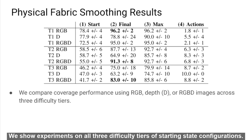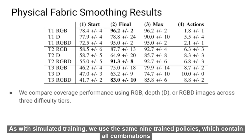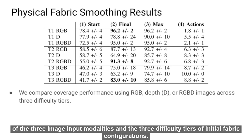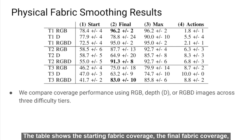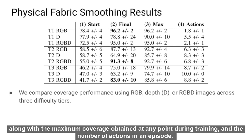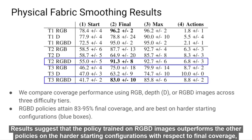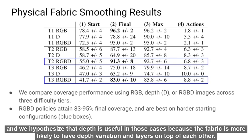We show experiments on all three difficulty tiers of starting state configuration. As with simulated training, we use the same nine trained policies containing all combinations of the three image input modalities and the three difficulty tiers of initial fabric configuration. We run a total of 20 test time episodes for each policy, resulting in 180 episodes represented in the table. The table shows the starting fabric coverage, the final fabric coverage, the maximum coverage obtained at any point during the episode, and the number of actions. The results suggest that the policy trained on RGBD images outperforms the other policies on the harder starting configurations with respect to final coverage. We hypothesize that depth is useful in those cases because the fabric is more likely to have depth variation and layers on top of each other.